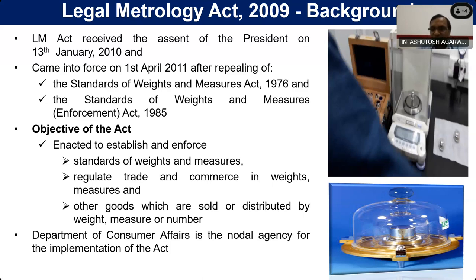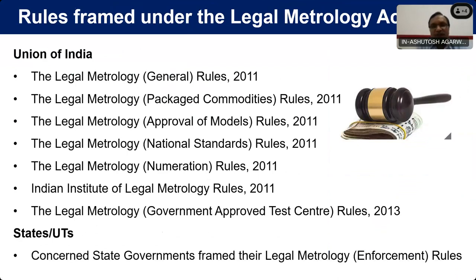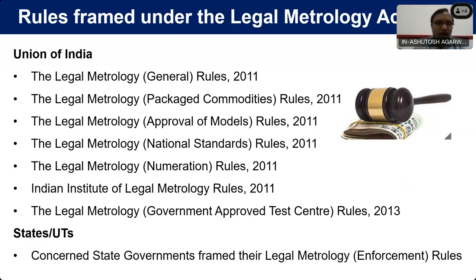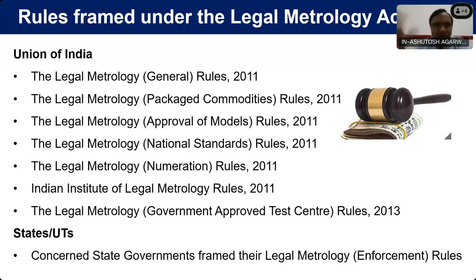Under the Department of Consumer Affairs, this Legal Metrology Act is being maintained and implemented. If we talk about the rules — since the Act has only 57 sections — different rules have been framed under the Act. The first is the General Rules. It is called 'general' but it is actually the most important rule, covering all types of weighing and measuring instruments: how testing will be done, how instruments will be constructed or manufactured, how they will be verified and stamped, and when. All these processes are covered under the Legal Metrology (General) Rules 2011.